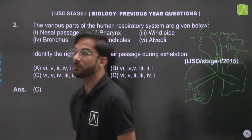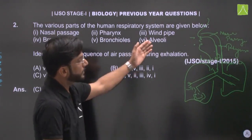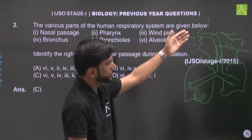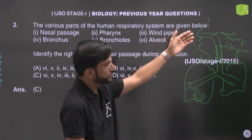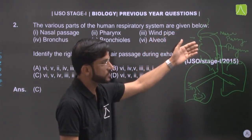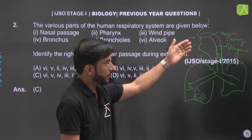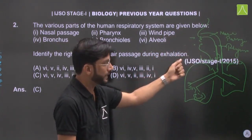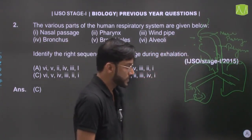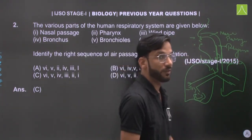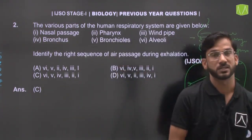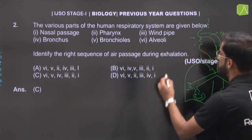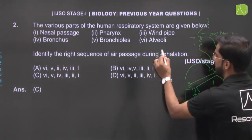Inhalation means air moves from the external environment through external nostrils, internal layers, pharynx, then trachea or windpipe, then bronchus, bronchioles, and finally alveoli. This is the inhalation process. But our question asks about exhalation.